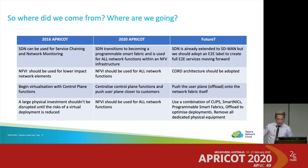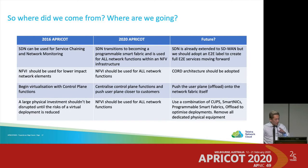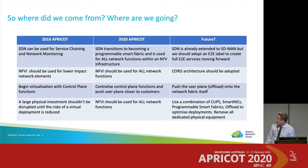On a final retrospective slide: in 2016 at APRICOT, a presentation suggested SDN can be used for service chaining and monitoring, NFVI should be used for lower-impact network elements, virtualisation of control plane functions should begin, and large physical investments shouldn't be disrupted until risks of virtual deployment are reduced. Realistically, nothing has changed much over the last four years — the industry has been moving very, very slowly, but for good reason.